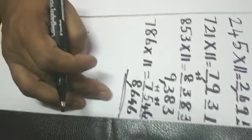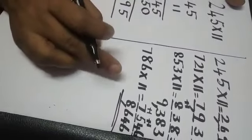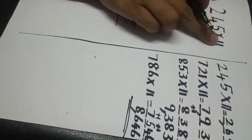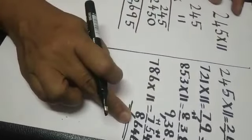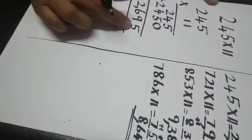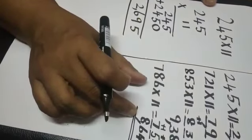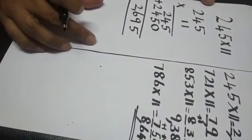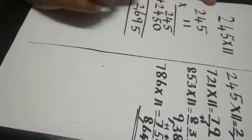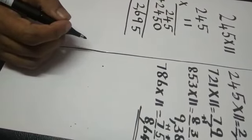This shortcut method can be used for verification. There is a condition: this method only works when numbers are multiplied by eleven. It is not a substitute for the traditional multiplication method. I will give you a worksheet with two-digit numbers and three-digit numbers multiplied by eleven. You can enjoy it — have a nice day!